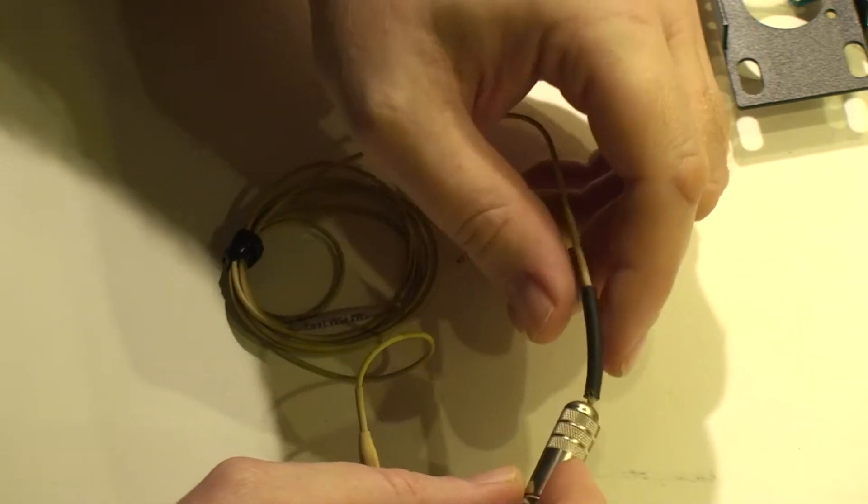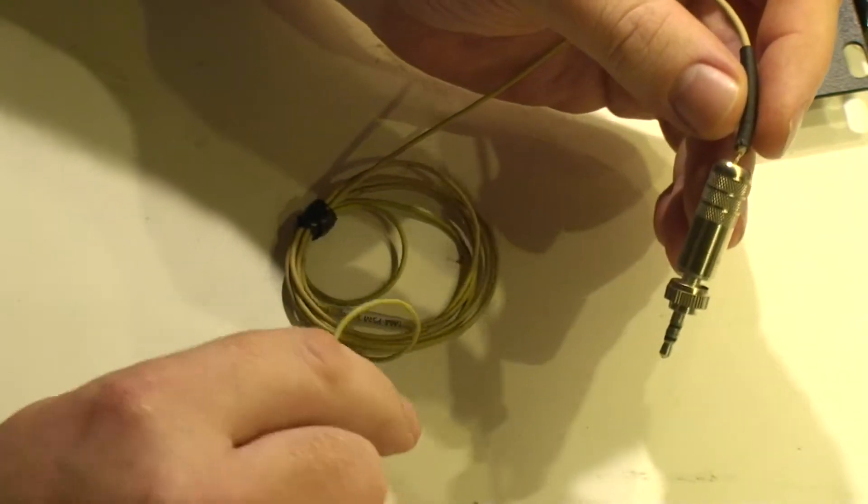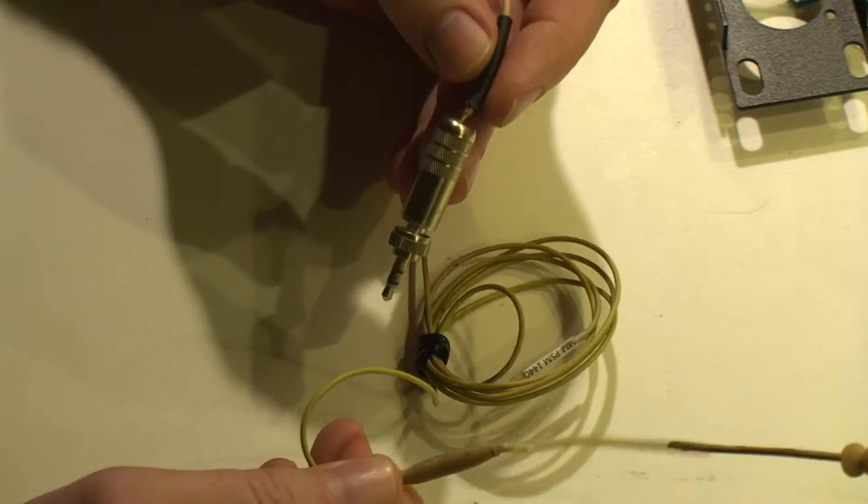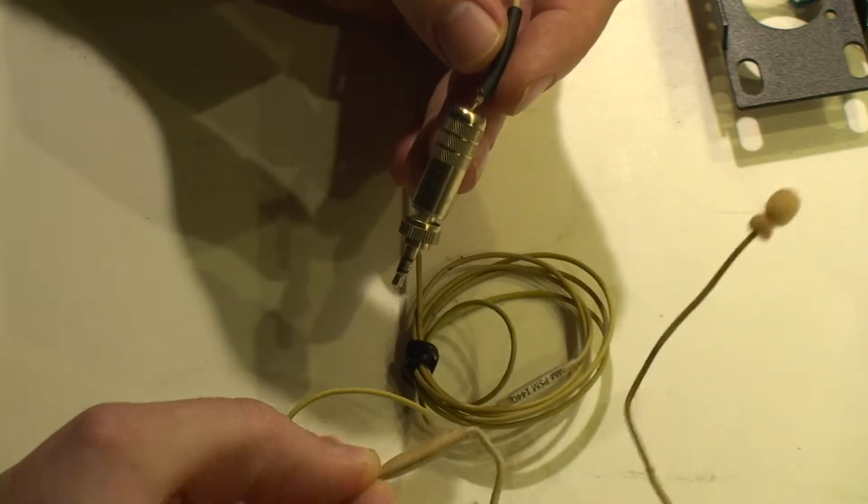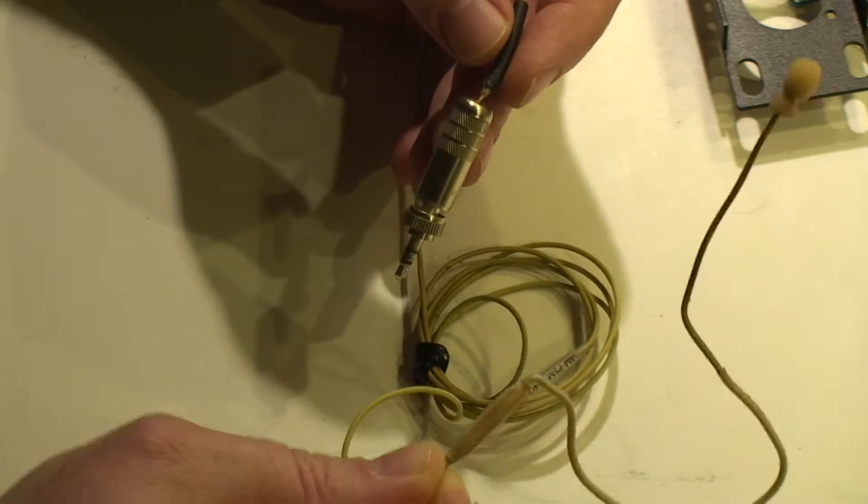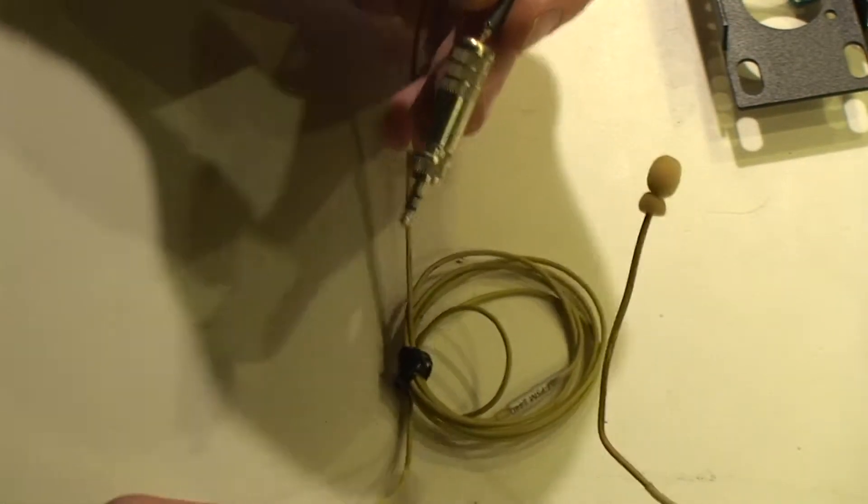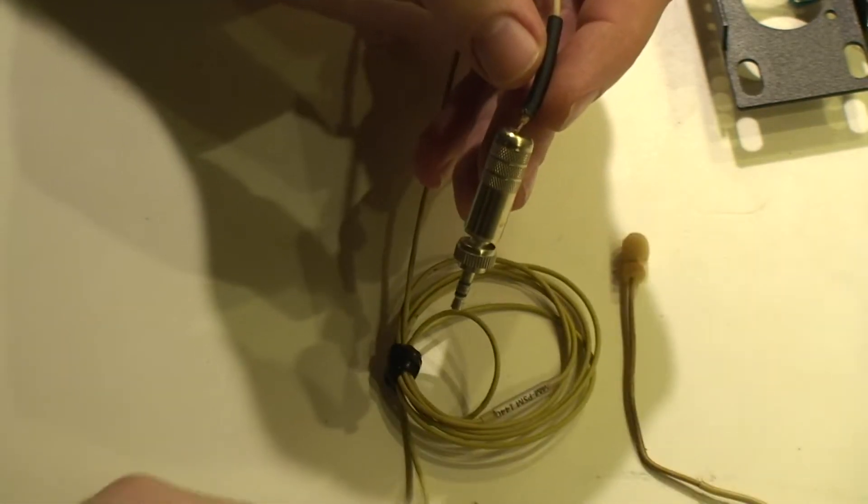What's nice about the Countryman is the cable that goes from the connector to the ear set is actually replaceable. And that is the number one component that fails. If you start getting popping or static, it'll either be the connection to here or the connection to here. And often just replacing the cable will fix the problem. You can also try using a little bit of contact cleaner on it.